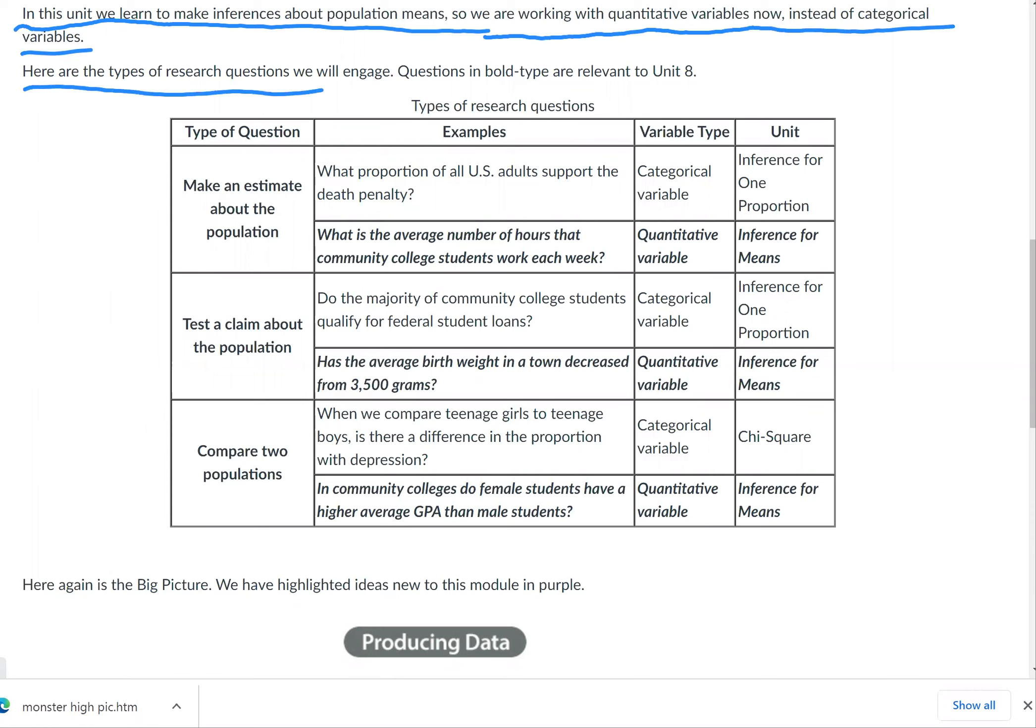Here are the types of research questions we will engage. Questions in bold type are relevant to Unit 8. So we want to be able to make an estimate about a population, but this time in bold we have quantitative variables. This was the last unit, Unit 7, where we would talk about qualitative variables.